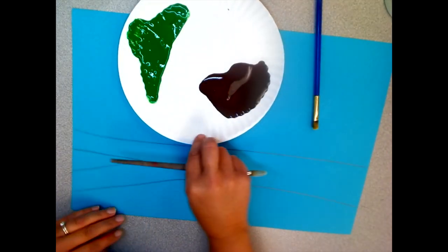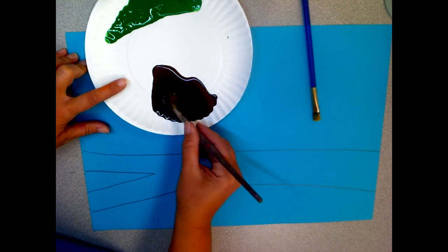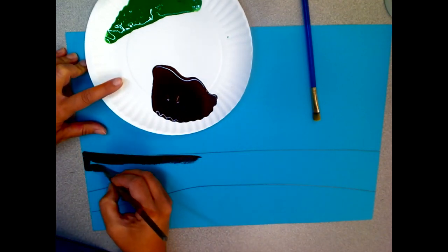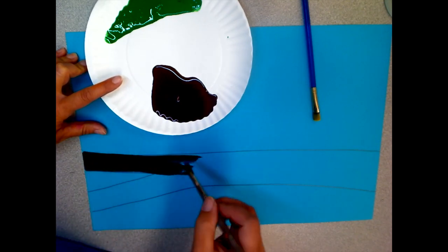Fill in the whole branch except for where your V is because that's going to make it look like your branch is separating into two different directions.